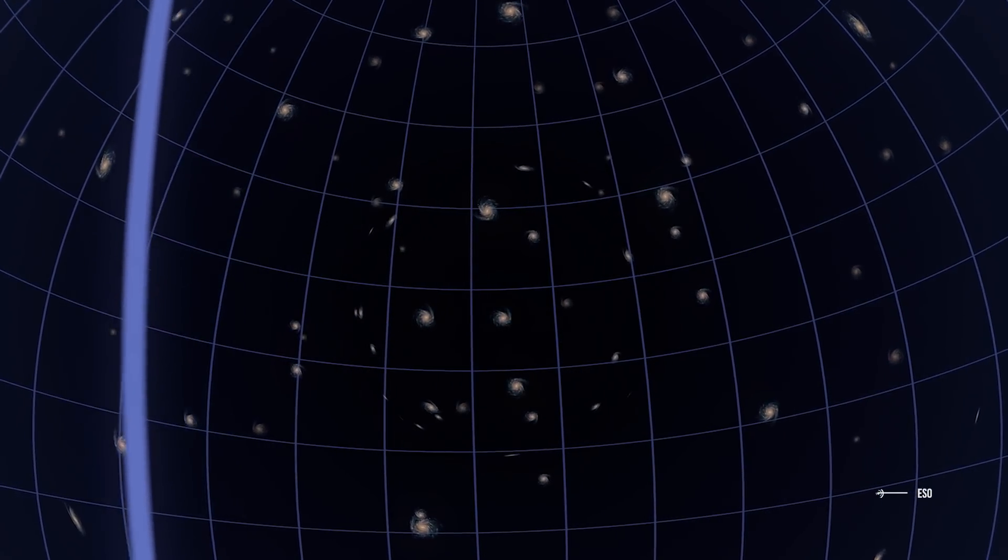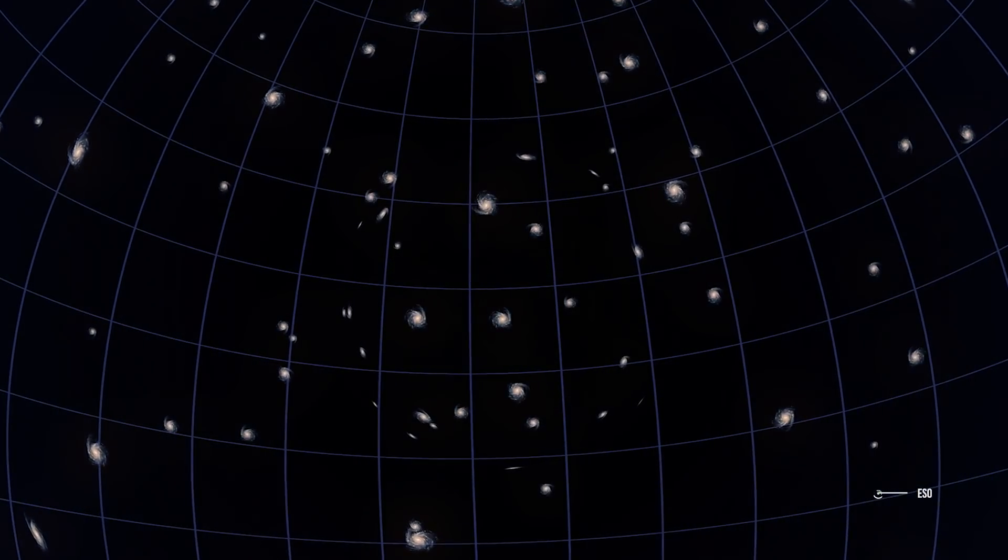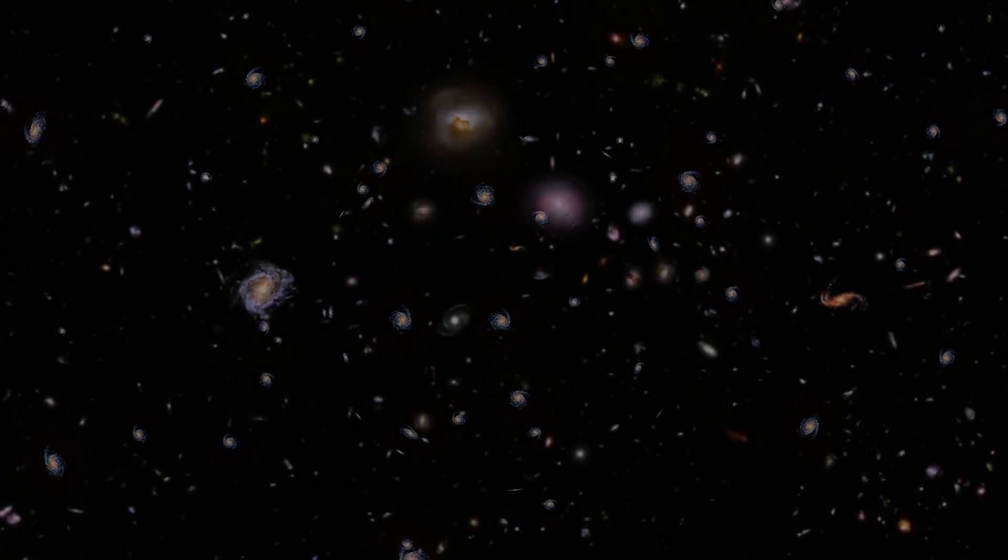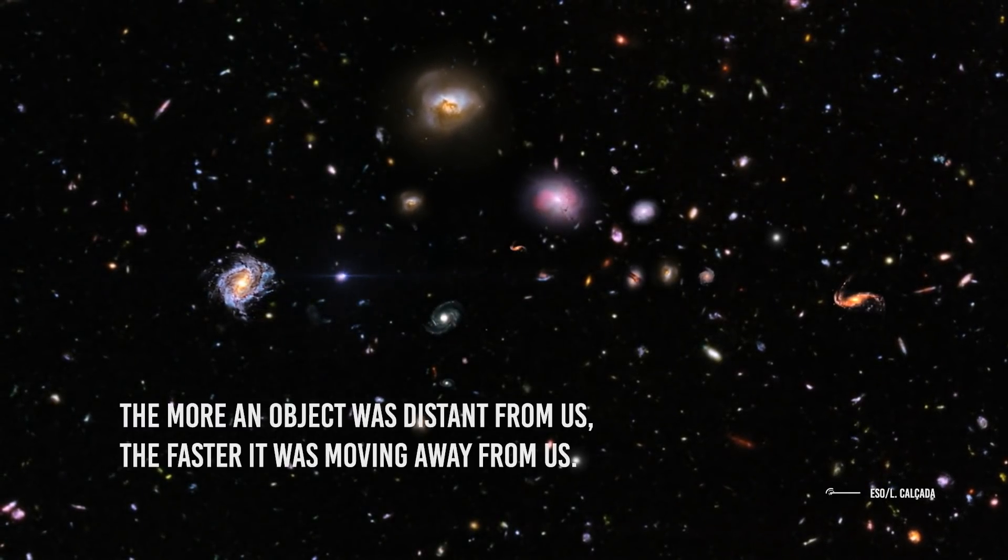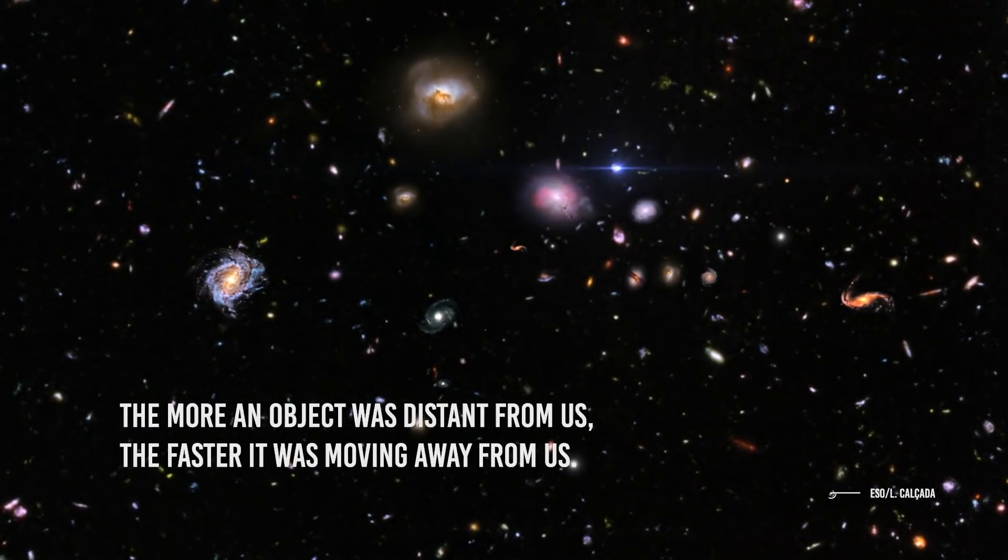One of the greatest astronomers of all time discovered one of the most mind-blowing laws of the universe. What he found was that the entire universe was expanding, and it was doing so according to an empirical formula. This almost magic formula was saying that the more an object was distant from us, the faster it was moving away from us.